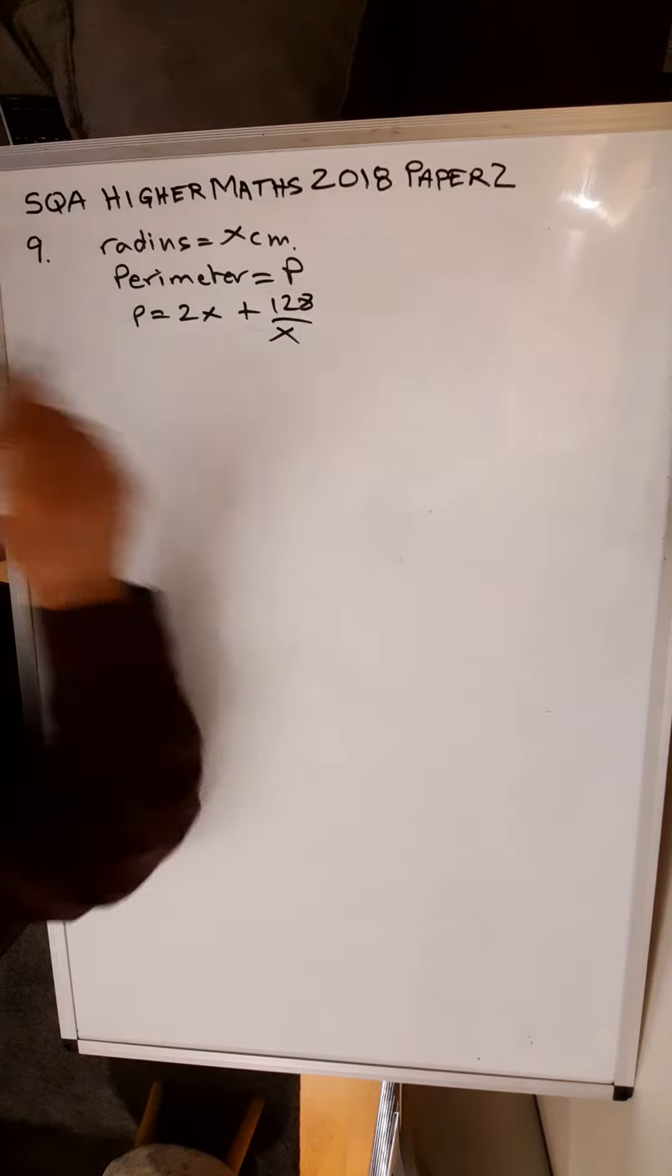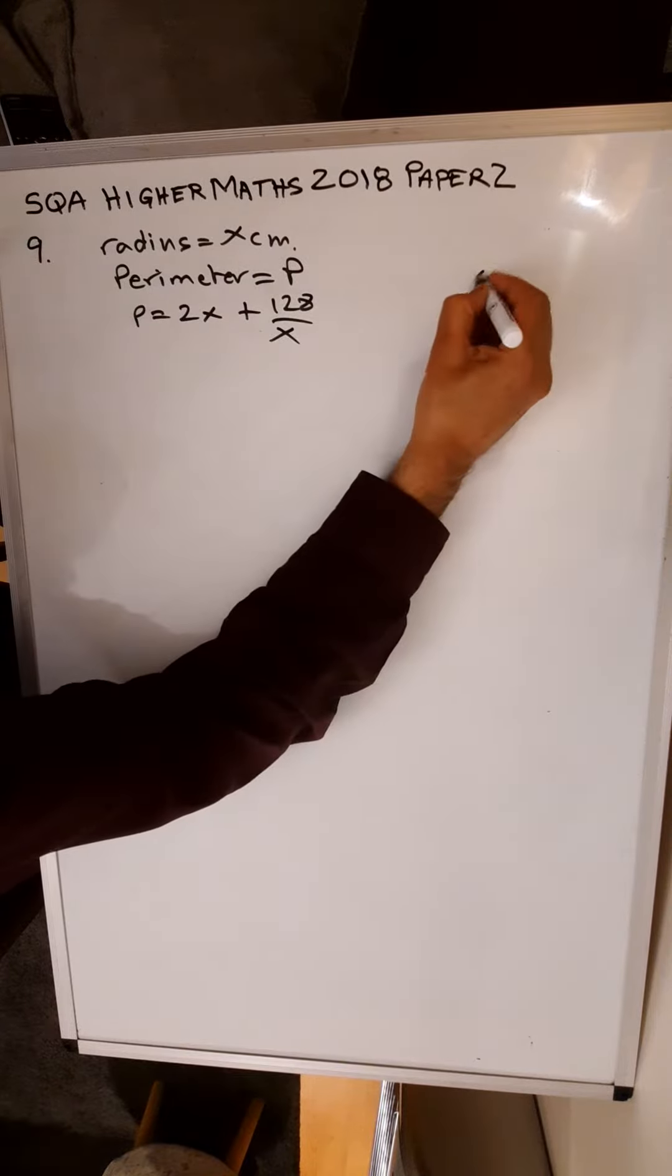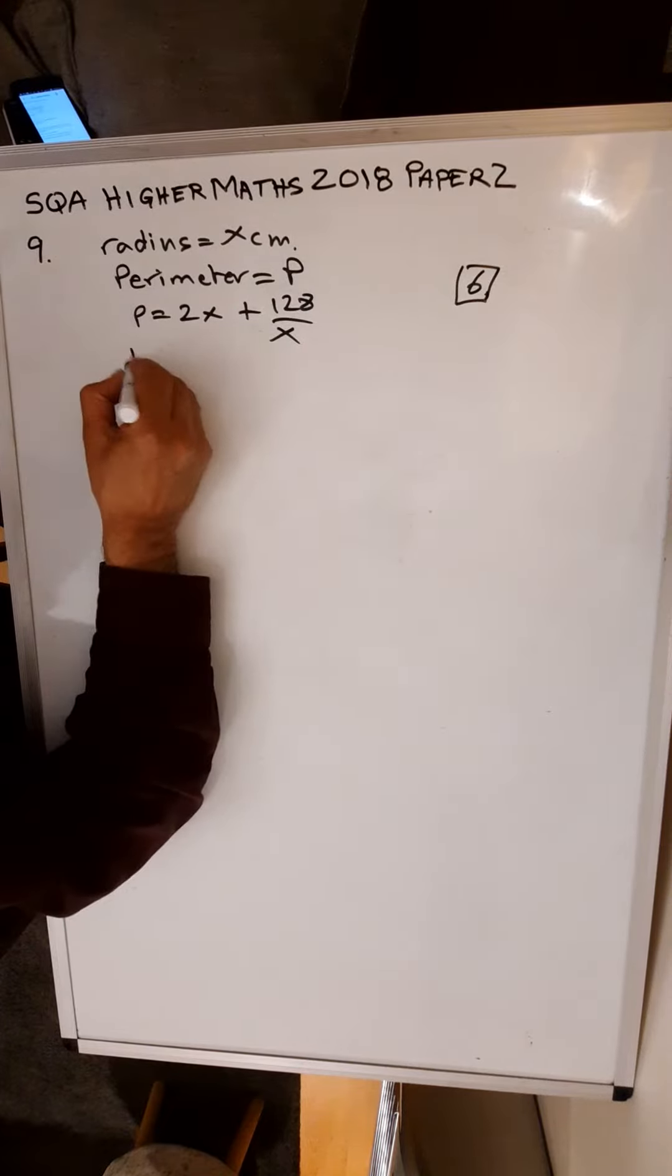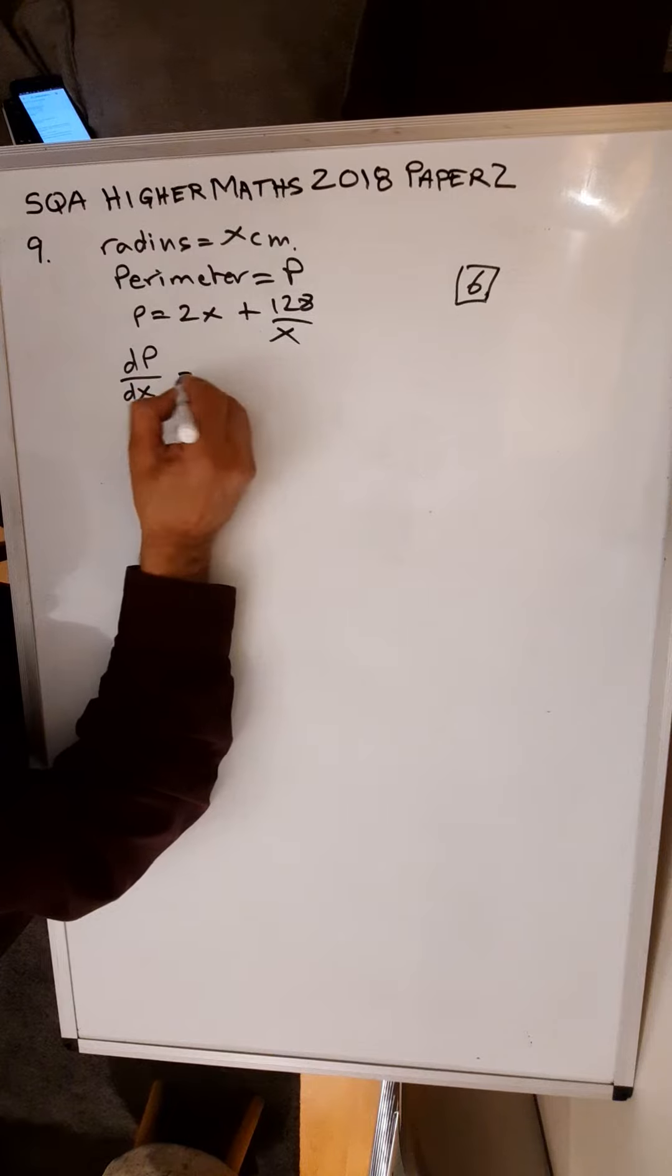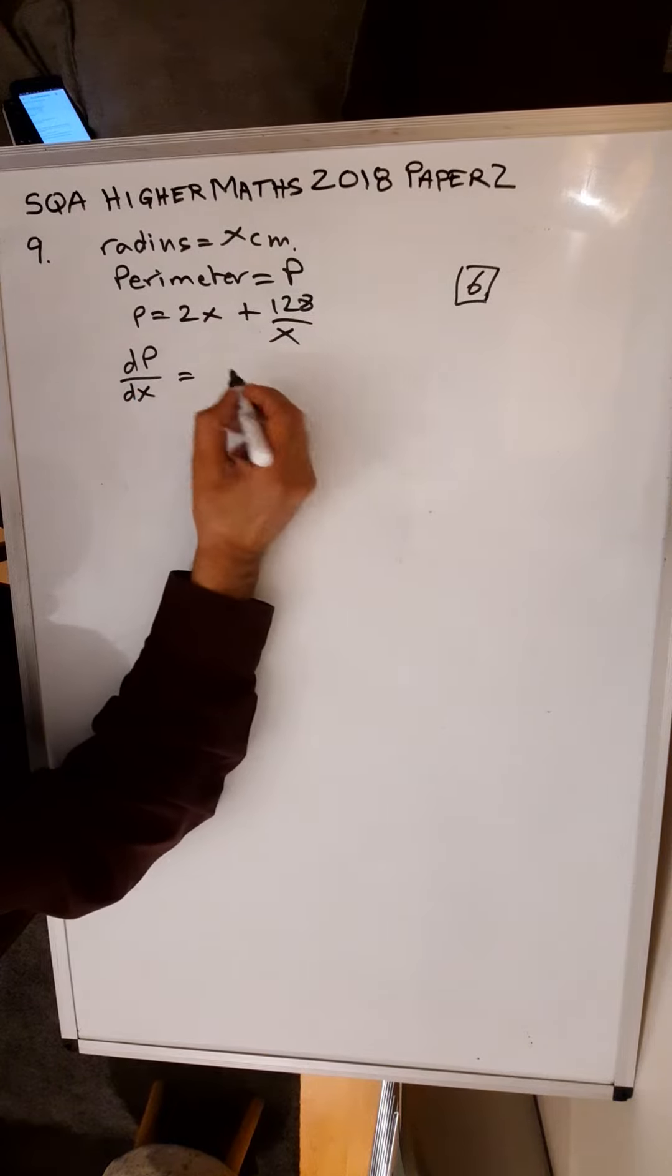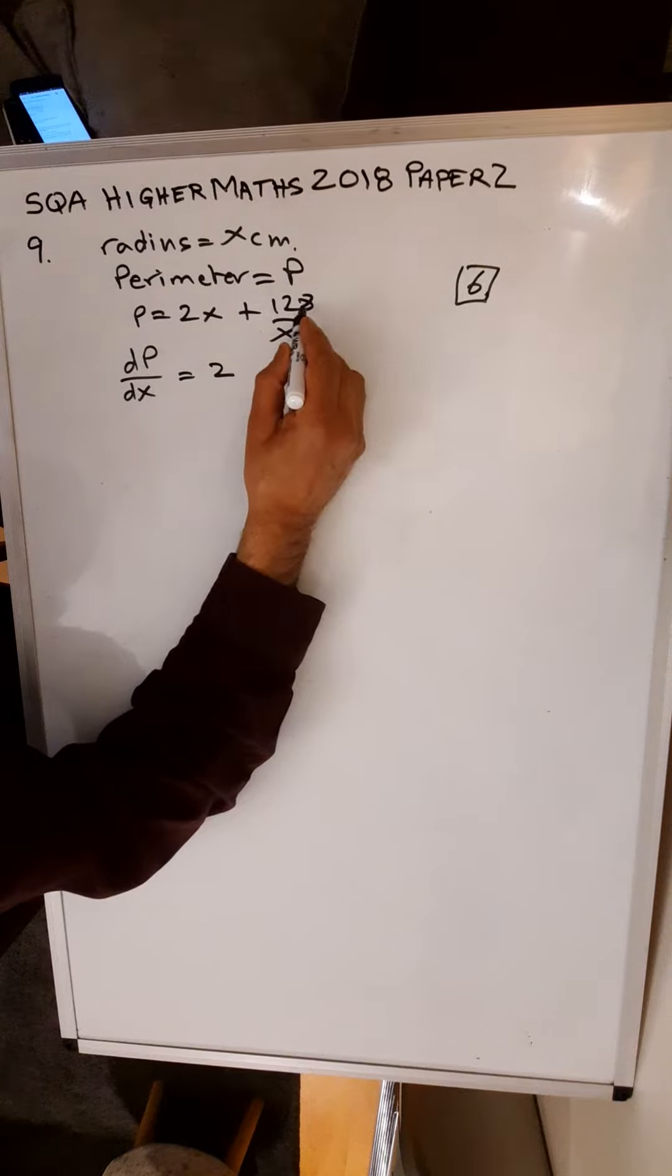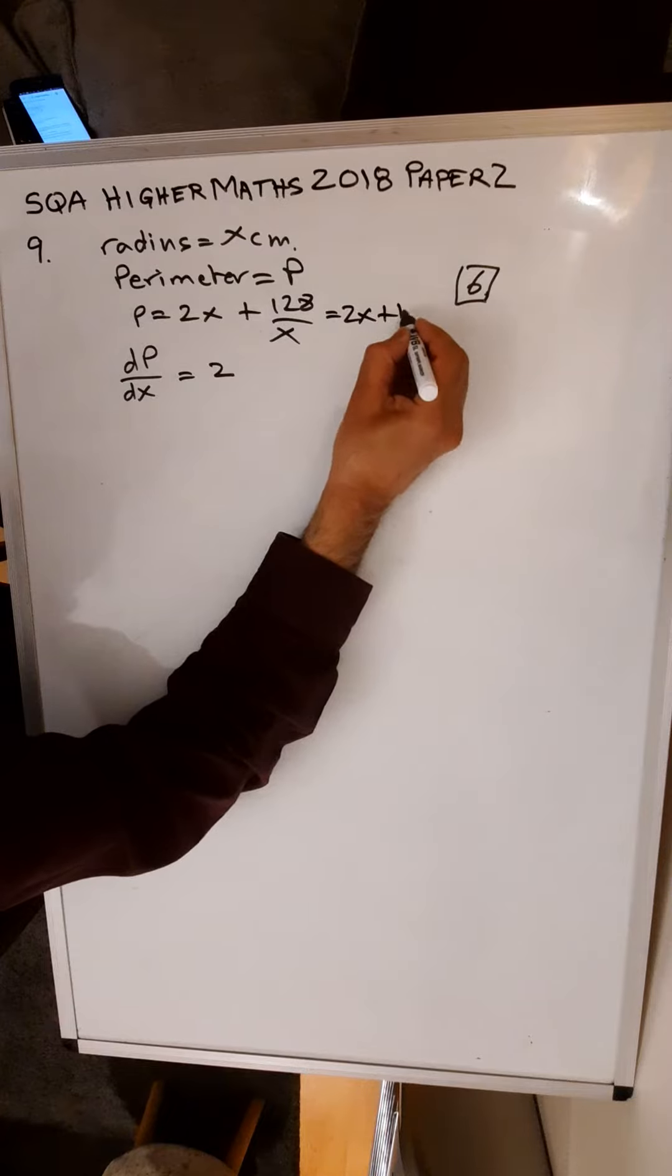This is for six marks. We need to differentiate this. Differentiating this would be dp by dx. The differential of 2x is just 2. This is 128x to the minus 1. Let's rewrite this: 2x plus 128 x to the minus 1.